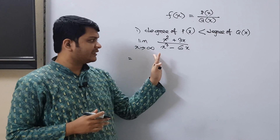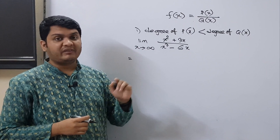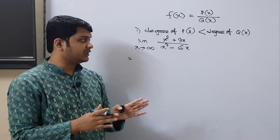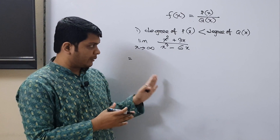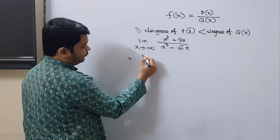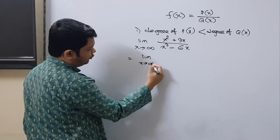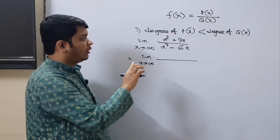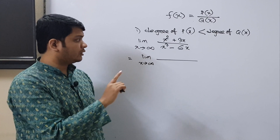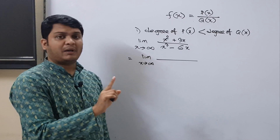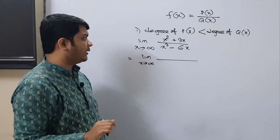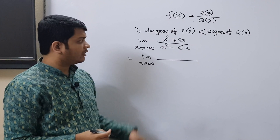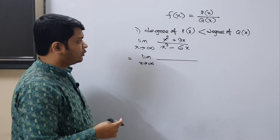I can easily state the answer in just one second, and I will reveal that trick at the end of the discussion. But first, we will see how to solve this type of problem in detail. What we do in the next step is divide all the terms in the numerator and denominator by the highest power present in the numerator. The highest power of x is 2, that is x², so we will divide all terms by x².